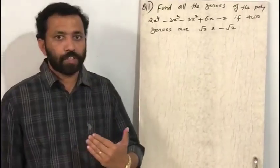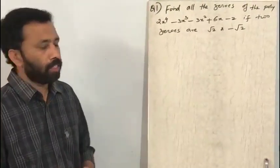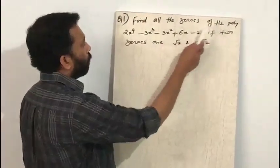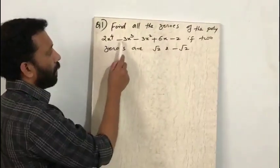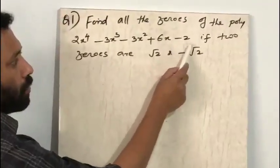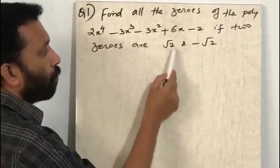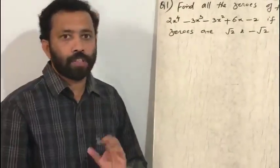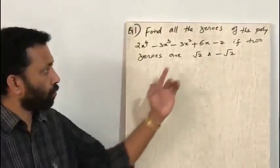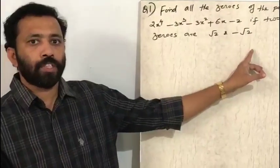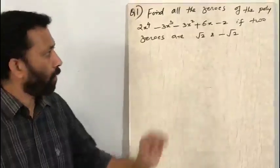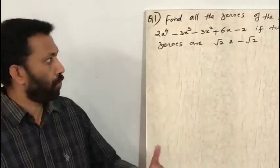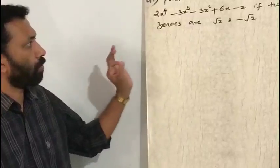Now we are going to solve some important questions from the chapter on polynomials. Question 1: Find all the zeros of the polynomial 2x⁴ − 3x³ − 3x² + 6x − 2, given that two zeros are √2 and −√2. Since this is a biquadratic polynomial, it has 4 zeros. Two zeros are given and we need to find the remaining two — all the concepts learned so far will be used.